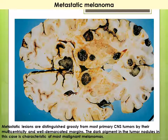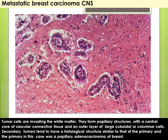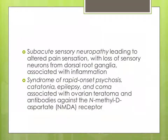The tumor nodules in this case are characterized as malignant melanoma, evidenced by their dark gross appearance. Microscopic picture of breast carcinoma metastasis to CNS shows papillary structures with a central vascular connective tissue core and an outer layer of large cuboidal and columnar cells — secondary tumors tend to retain the histological features of their tumor of origin. Other paraneoplastic patterns include limbic encephalitis causing subacute dementia with perivascular inflammatory cells, subacute sensory neuropathy with loss of dorsal root ganglion neurons, and a syndrome of rapid-onset psychosis, catatonia, epilepsy, and coma associated with ovarian teratoma and antibodies against NMDA receptors.